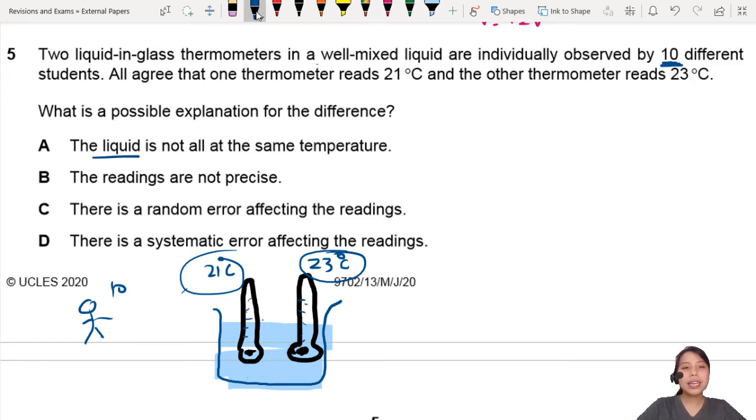Let's look at A: The liquid is not all the same temperature. This is incorrect. Why? Because they already told us it is a well-mixed liquid. The argument could be that maybe on this side the liquid is hotter, that side the liquid is cooler, but no - it's well mixed, so they all should be the same temperature. That's not a possible explanation.